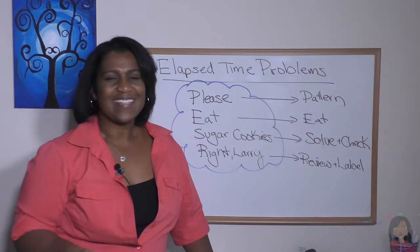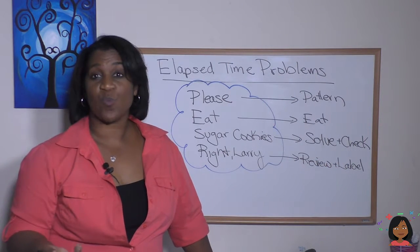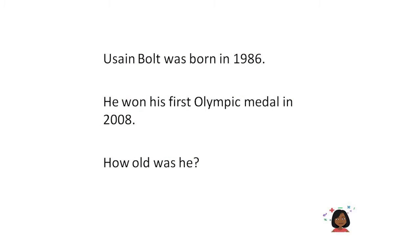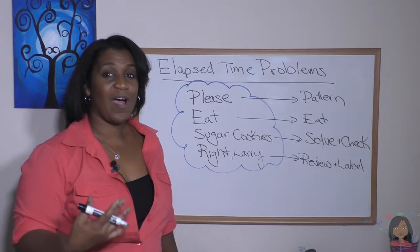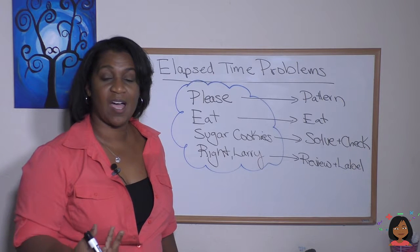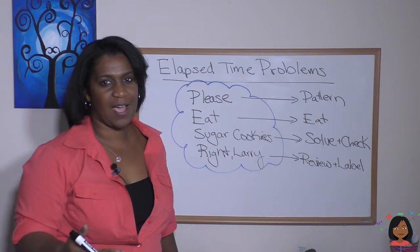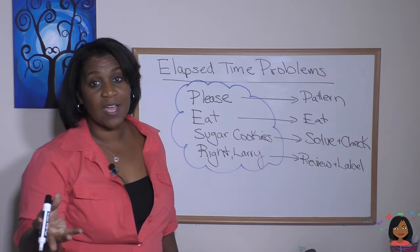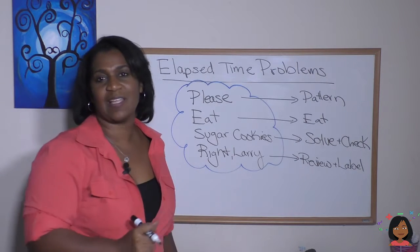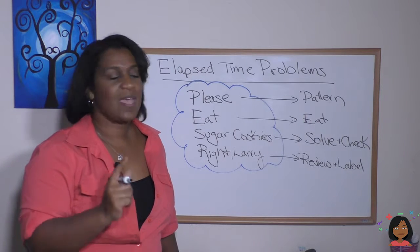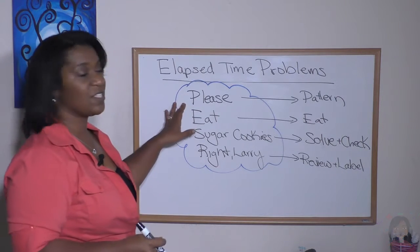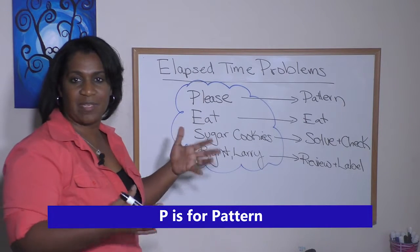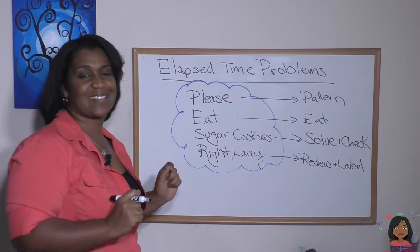Meaning Larry is not eating the sugar cookies, right? We're going to use this with our first word problem. Take a look: Usain Bolt was born in 1986. He won his first Olympic medal in 2008. How old was he? Well, we can easily tell that that is a problem about time, and how do we know that it's about elapsed time? Well, they're talking about he was born at a certain time, then some time passed, and then he won the Olympic medal. That is elapsed time. If we look at our device here, it says Please, figure out the pattern.